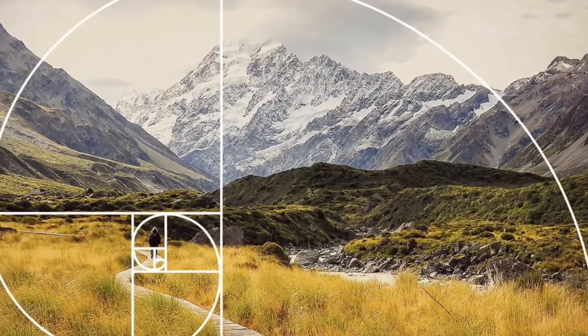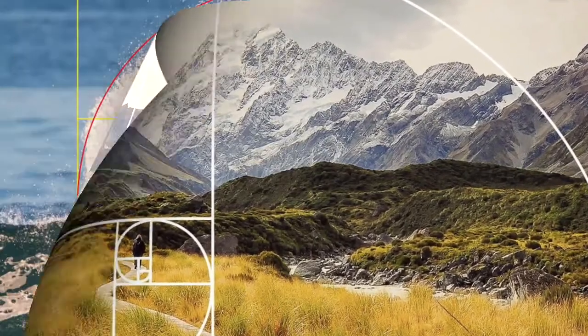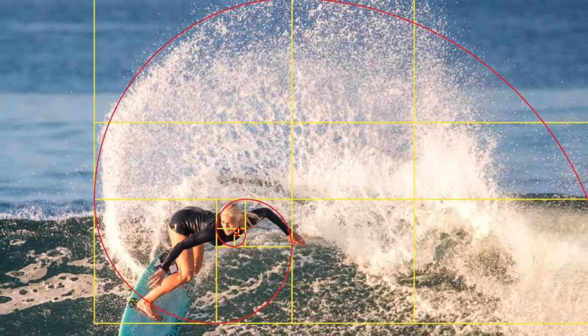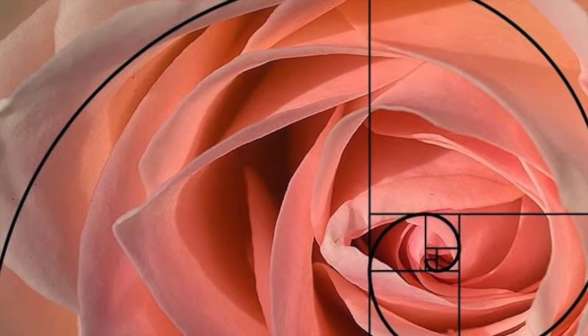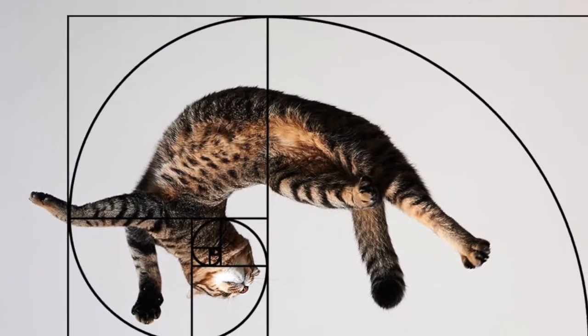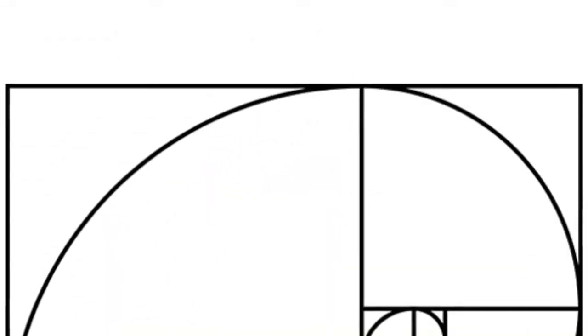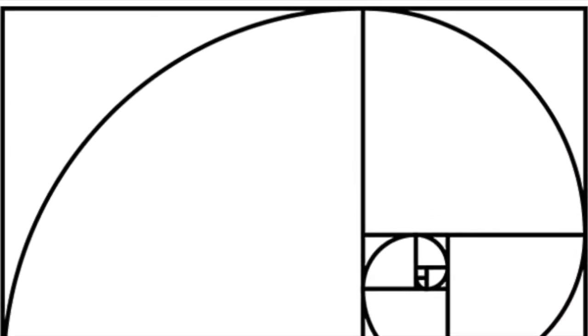The Fibonacci spiral can be used to add an element of flow to a visual composition to make it more dynamic. If you don't know what a Fibonacci spiral is, very briefly, it is a logarithmic spiral whose growth factor is phi, also known as the golden ratio.